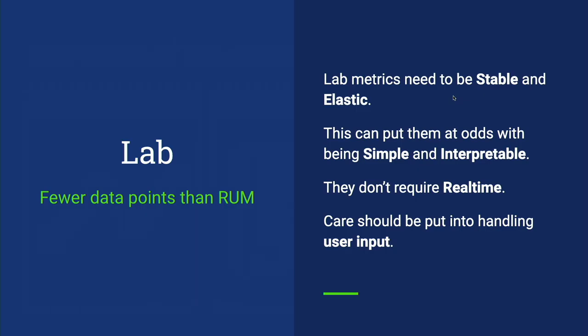Now I'm going to go over the use cases we have for these top-level metrics. First, the lab — running benchmarks either locally on your machine to debug and improve performance, or on continuous integration. There's a lot less data in the lab than for real user metrics, which means it's very important that things be stable and elastic. A big value of the lab is being able to reproduce and pinpoint changes in performance. Sometimes that puts it at odds with being simple and interpretable. Lab metrics do not require real-time — you can take a Chrome trace, spend time processing it, and get metrics — though you still need some kind of limit on continuous integration.